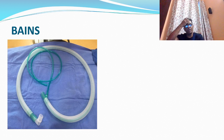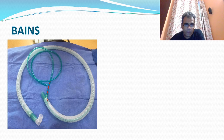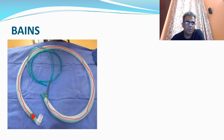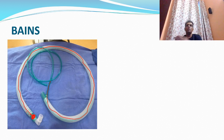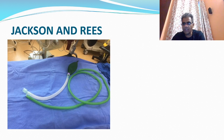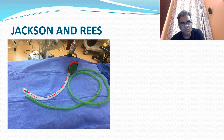Looking at the visual impression of these circuits: this is the Bain's circuit — you can see the inner tube going all the way through. They are made transparent so you can see if the two tubes get kinked. The point where mixing is possible is visible, and expired gases go through the outer tube. An advantage of Bain's circuit is its long length, making it useful for neurosurgical patients where the anesthetist stands far from the patient. This is the Jackson-Rees — originally just an Ayre's T-piece to which Ayre attached tubing, and then Jackson-Rees added a bag.